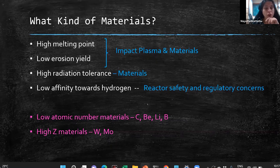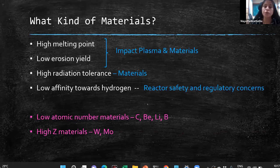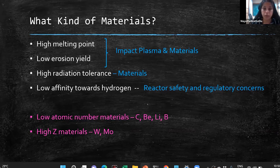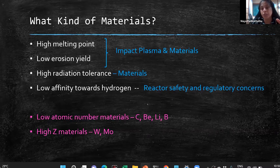The choice of material is still an open area requiring more study. Currently there is overall agreement on two classes: either low atomic number materials such as carbon, beryllium, lithium, or boron — which may have high erosion but certain radiation advantages — or very high-Z materials like tungsten, which has a very high melting point. Carbon is extremely interesting because it has no melt layer: at high temperatures, carbon sublimes directly from solid to gaseous phase.